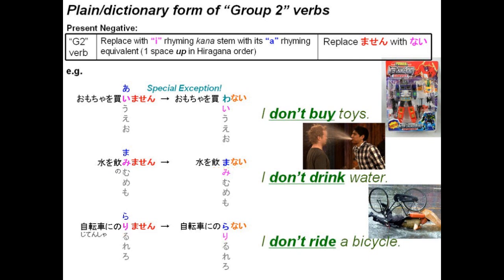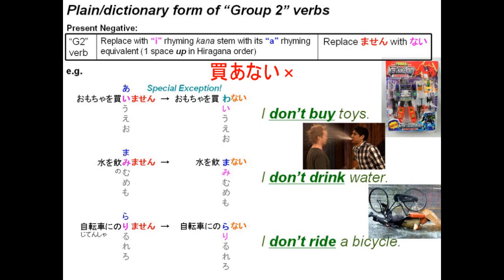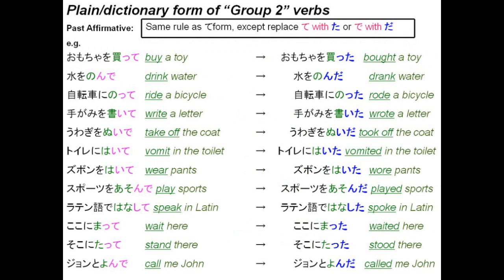Norimasen similarly becomes noranai. Now, there is one special exception: verbs that have i before the masu, like in kaimasen. Here, we're not going to go up to a, so it does not become kanai. What happens is that the a becomes replaced with wa. To put group 2 verbs into the plain past tense, we follow the exact same rule as te form, except that where you would have te it becomes ta, and de would become da.